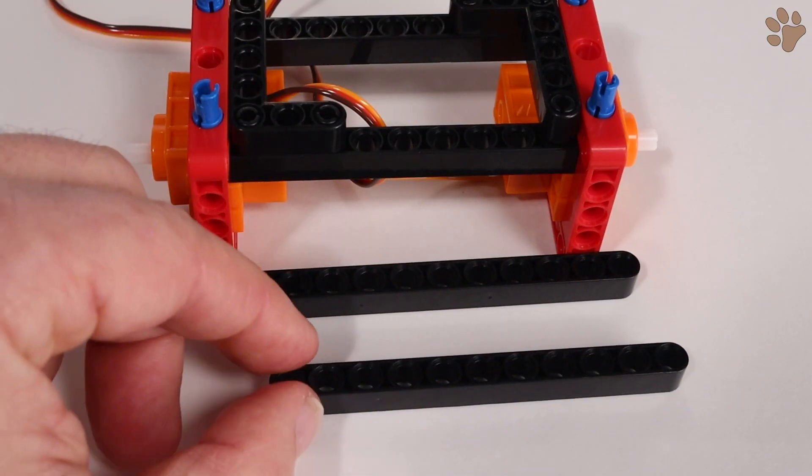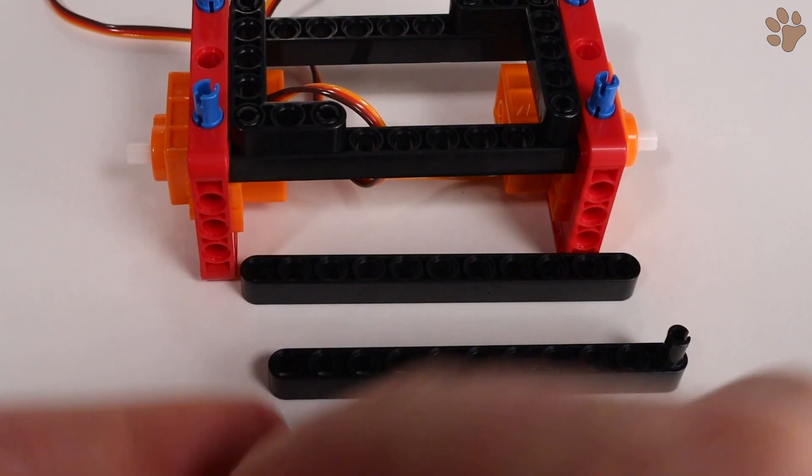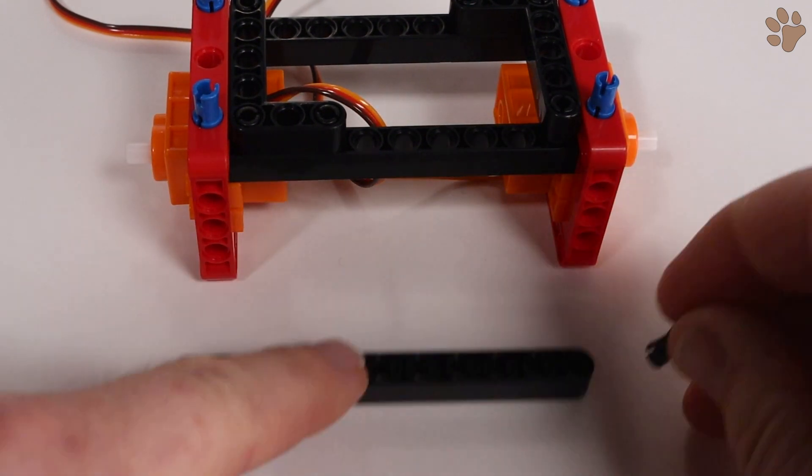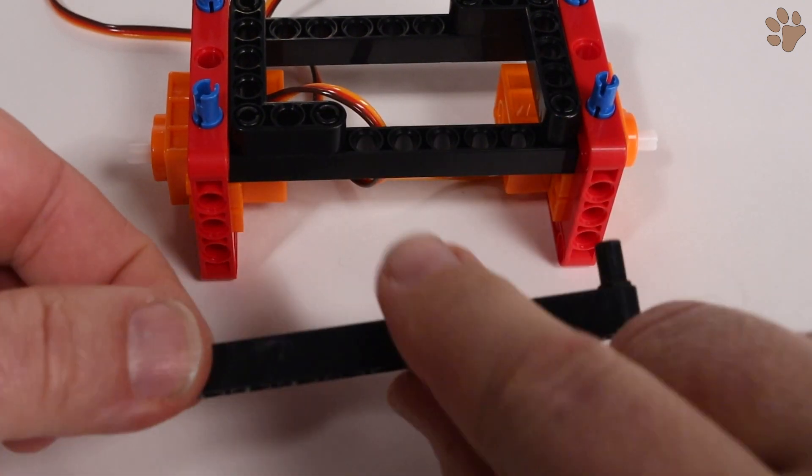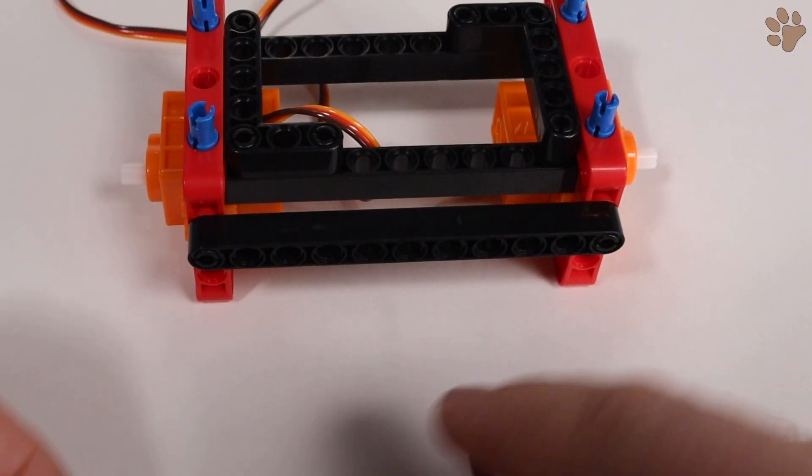Next, we'll attach the front beams. Take two more of the long black beams and add a short black pin to both ends. Then attach them to the front of the red frames.